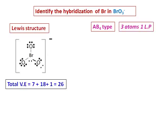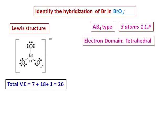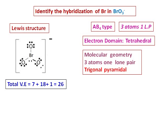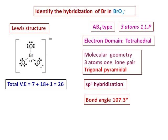The electron domain geometry will be tetrahedral due to the AB4 type. The molecular geometry will be trigonal pyramidal — three bonding atoms and one lone pair — giving sp3 hybridization. The bond angle will be 107.3 degrees, less than the tetrahedral angle, and the lone pair makes the molecule polar.